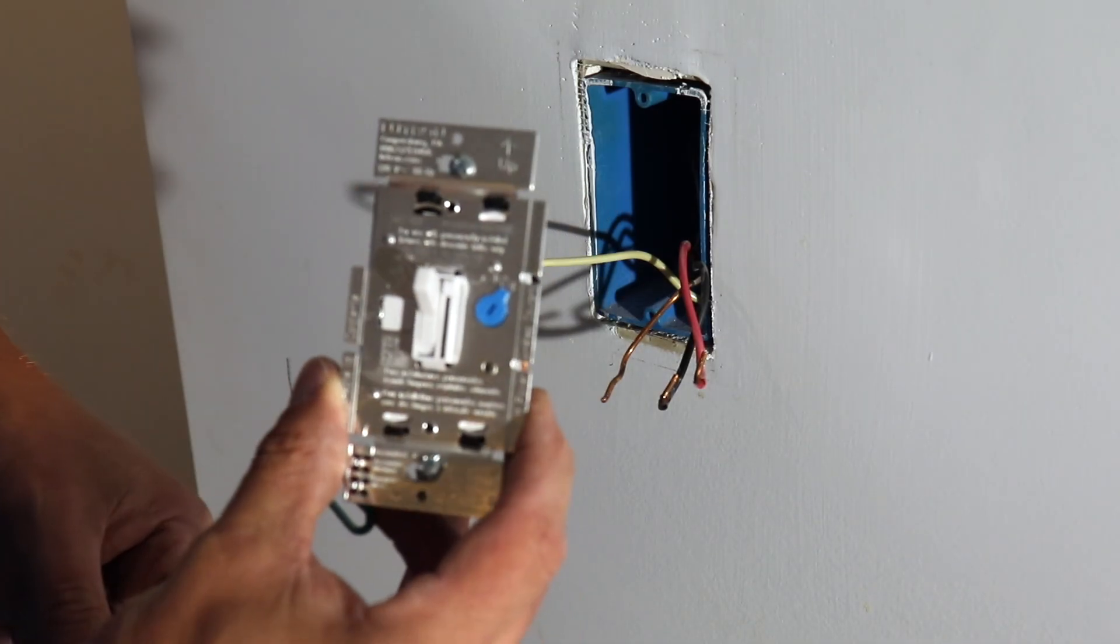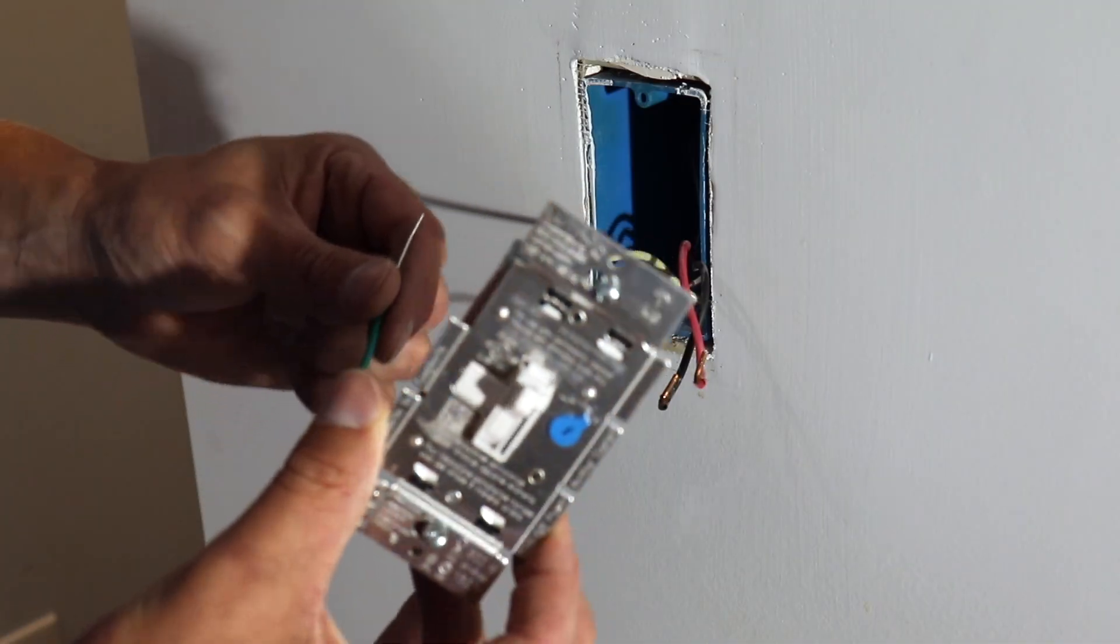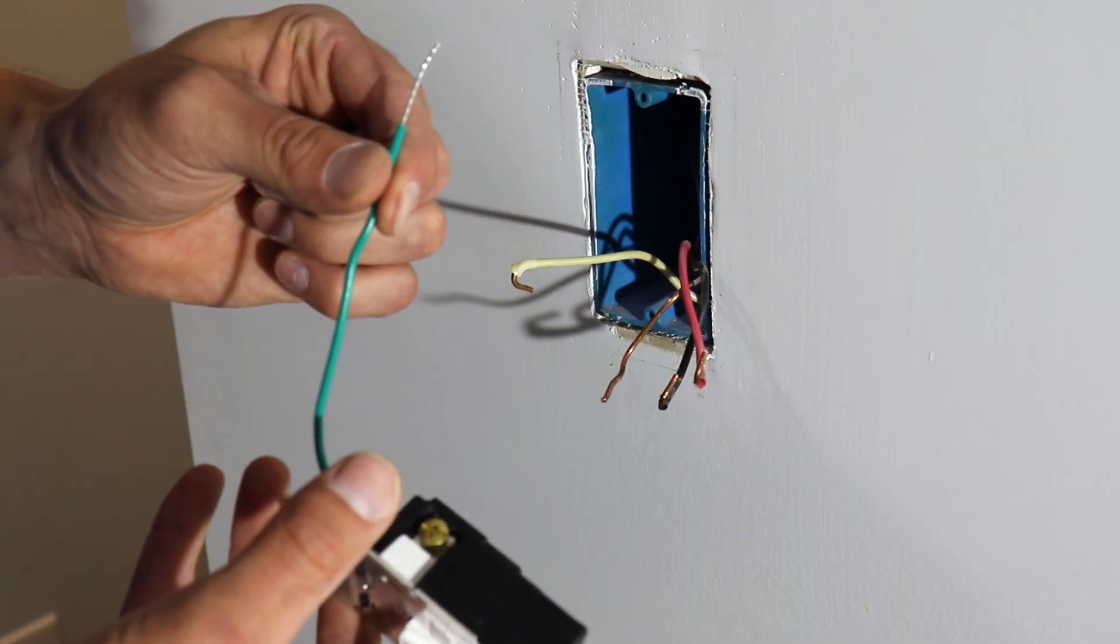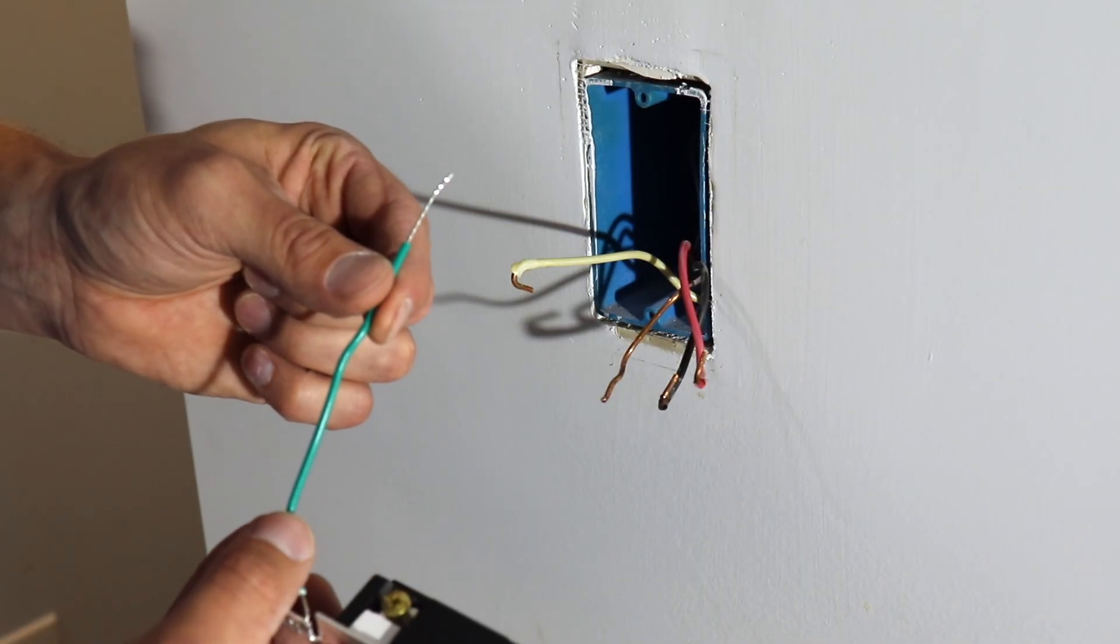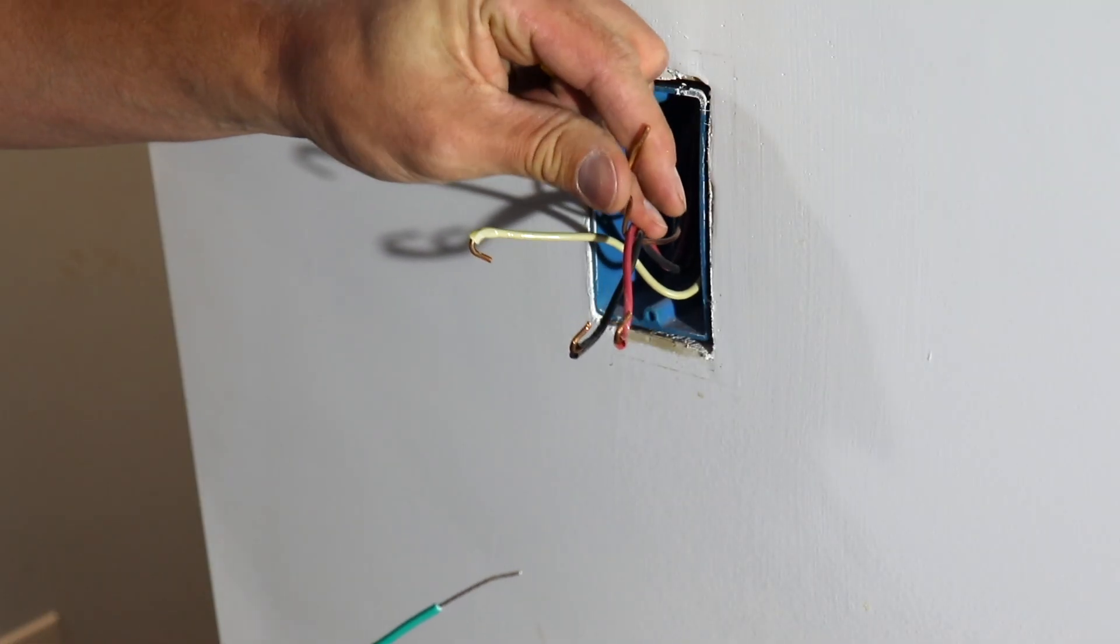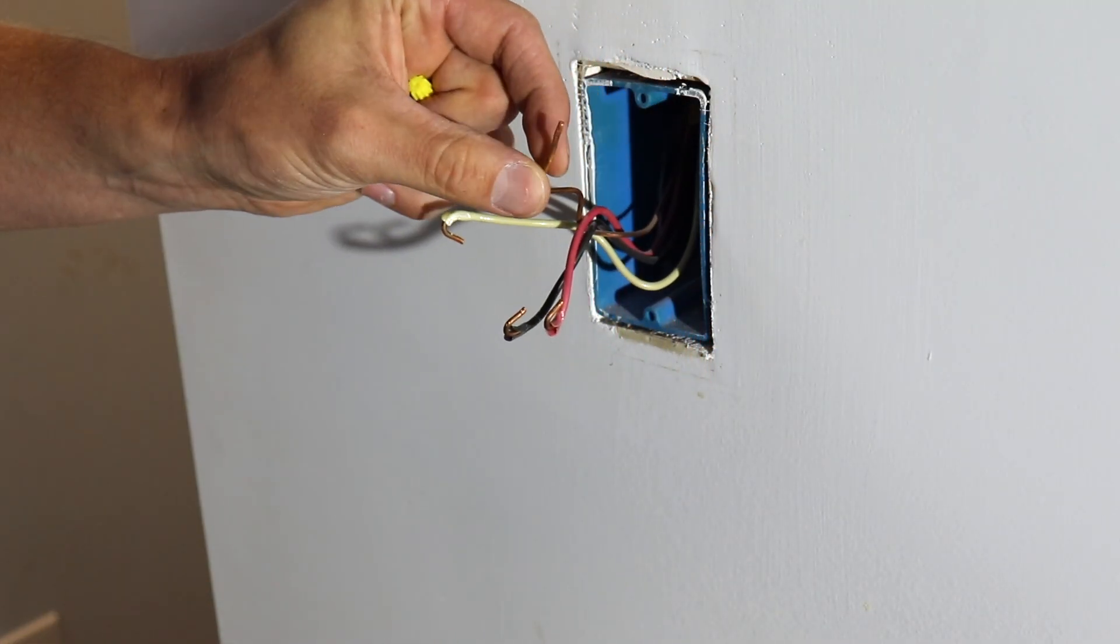So this is the new three-way dimmer switch that we're going to be using. And you can see it has this green wire. This is going to be your ground wire. So the first thing we're going to do is hook this ground wire up to the ground wire in the box, which is this bare copper wire right here.